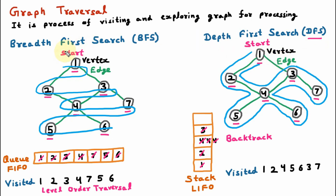Now we understand the difference between breadth first search and depth first search. BFS goes level by level — it completes the first level, then the second, and so on. DFS goes till the last level and then backtracks. In BFS, backtracking is not there, but in DFS backtracking is available. In BFS we use the queue data structure, and in DFS we use the stack data structure. BFS works on FIFO — first in, first out — so the element which comes first is processed first. DFS works on LIFO — last in, first out — so the element which comes last is processed first.